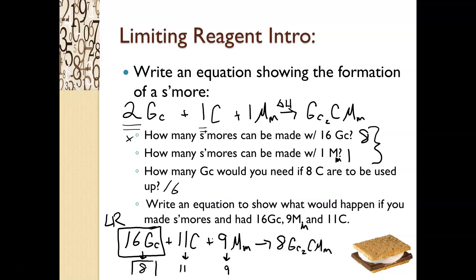Everything else is left in excess — those are excess reagents. The last question on your note sheet asks what is left over and how much. If we can make eight s'mores, we should have three pieces of chocolate left over and one marshmallow left in excess. That's all based on how much we used up.